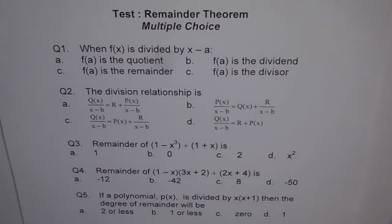Question 5 is, if a polynomial p(x) is divided by x times x plus 1, then degree of remainder will be what? Go through these questions and make a choice.